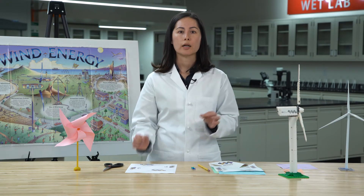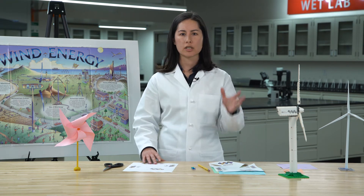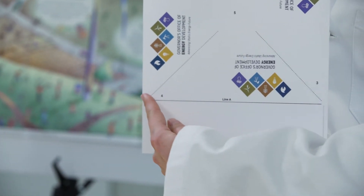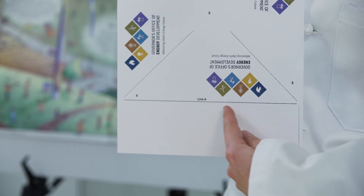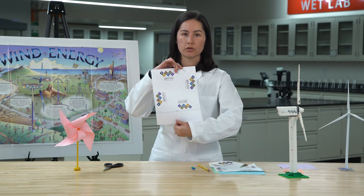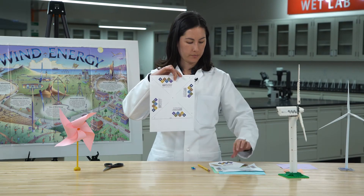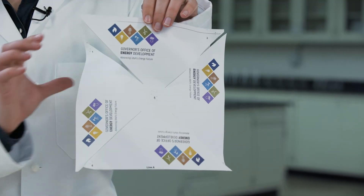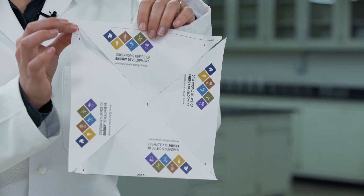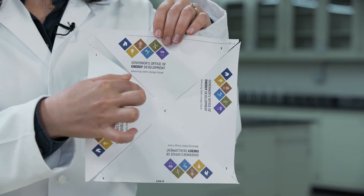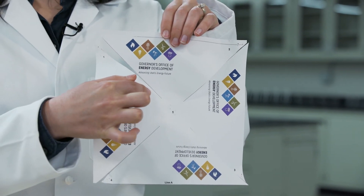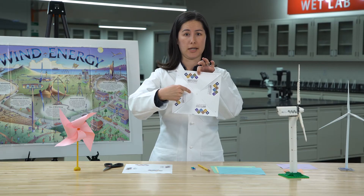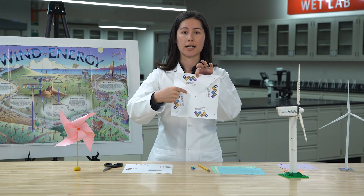We're building a pinwheel that will work just like a wind turbine. Take your template and cut along line A on the bottom, then remove that piece of paper. You'll end up with something that looks like this. Then from each corner, cut along the dotted line to where it ends. Please be sure to stop cutting once the dotted line ends.